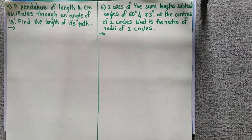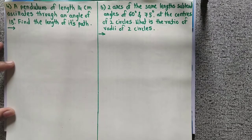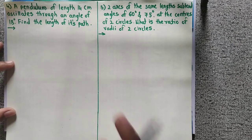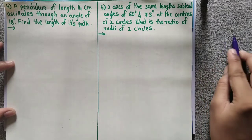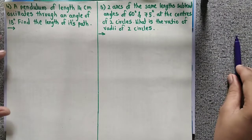Hi friends, welcome to our YouTube channel Chalk and Dustle. Today we will solve remaining questions of exercise 1.2. First question, question number 4 is: a pendulum of length 14 cm oscillates through an angle of 18 degrees.